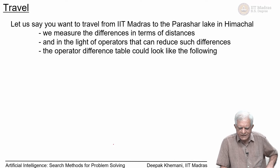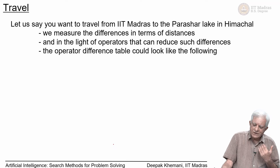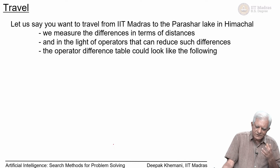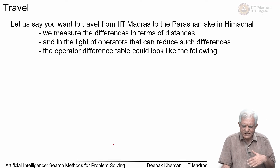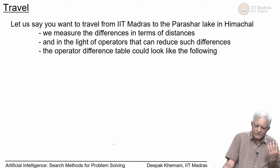The shaded nodes are the ones for which recursive calls have yet to be made. We will take a small example to understand this process — this is also how humans do planning. Their book was called Human Problem Solving; Simon was a multifaceted person — an economist, psychologist, and computer scientist. So, if you want to plan a trip to Parashar Lake in Himachal and you are sitting at IIT Madras, we measure differences in terms of distances.